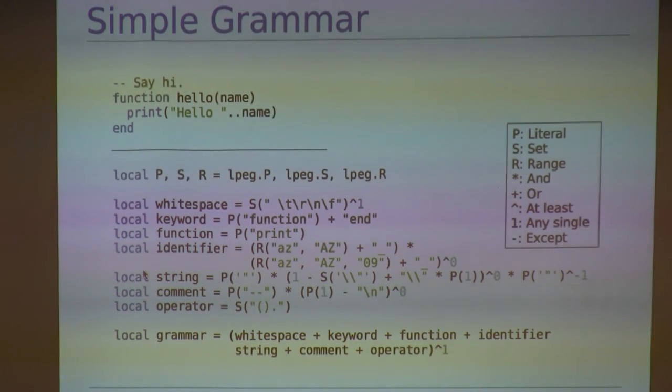Alright, now let's construct a simple grammar for the original Lua source code example, which I've conveniently syntax highlighted there at the top of the slide. Studying the source, you can pick out seven different tokens. These tokens are comments, white space, keywords, identifiers, operators, functions, and strings. So, now let's try and use LPEG to match each of these different kinds of tokens.